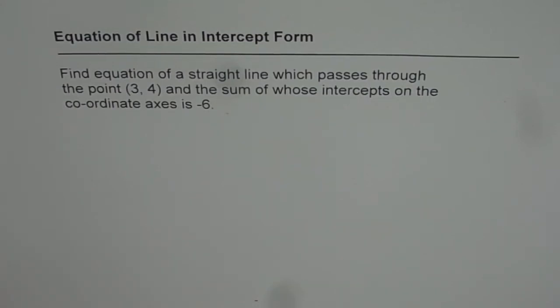Equation of line in intercept form. Find the equation of a straight line which passes through the point (3,4) and the sum of whose intercepts on the coordinate axis is -6.